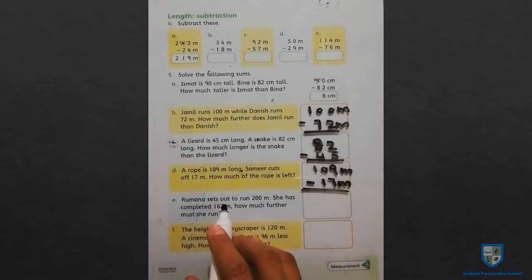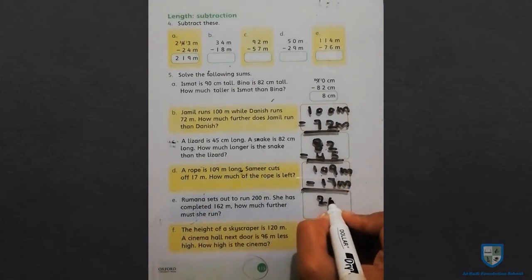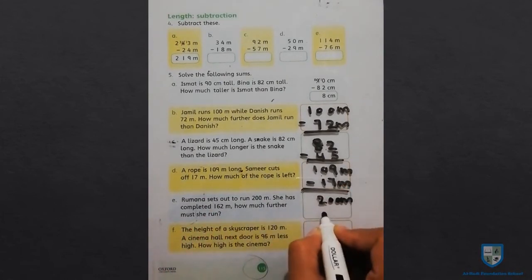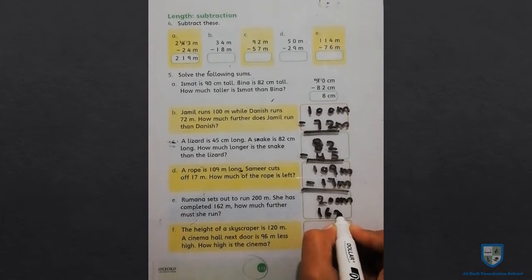रुमाना सेट्स आउट तो रन 200 मेटर शी हास कम्पलिटी टू मीटर हाव मच फर्दर मस्ट शी रन. 200 मीटर भागना है जिसमें से अभी वो 162 भागी है बाकी उसने कितना भागना है.